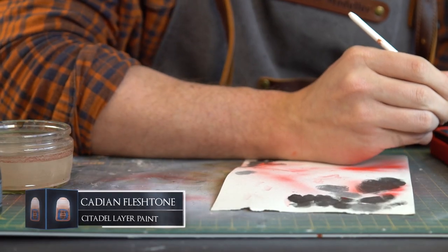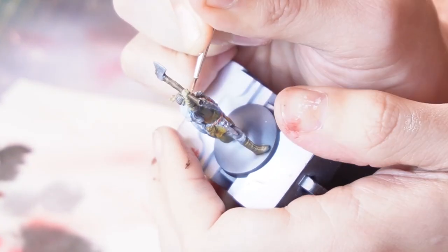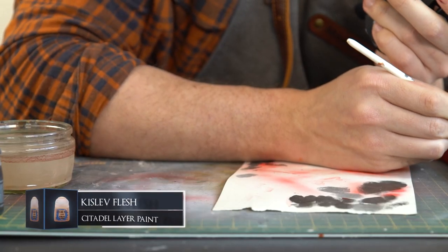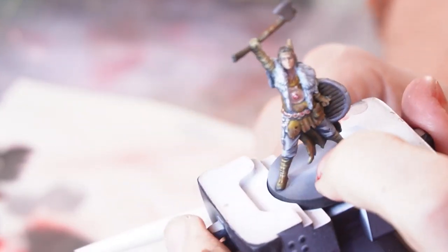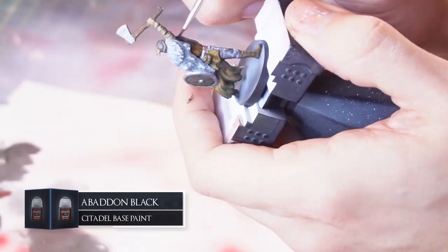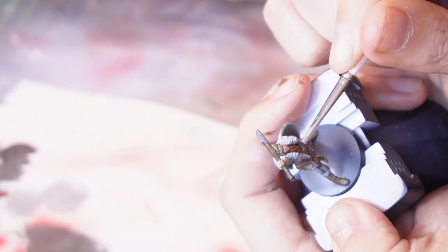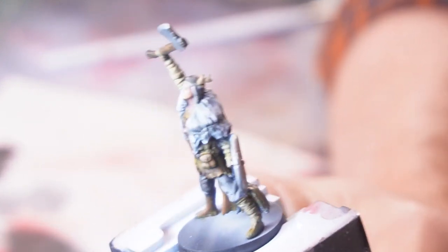With the skin tone, same as before. Moving up into the Cadian Fleshtone. And we're going to start highlighting the same areas. Nose, cheeks, forehead and chin. Then moving up to the Kislev Flesh. Just enhance those highlights a bit more. All right. Highlights around the model done. I'm going to move onto the Blackwash now. And start giving us some more shadows again. All right. With our blackwashing complete, we've got some more shadows going on.